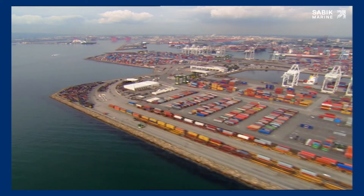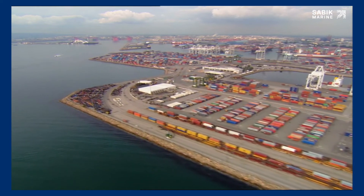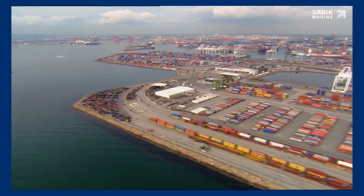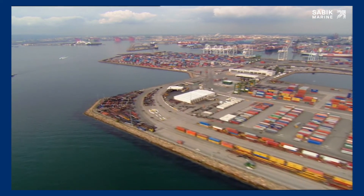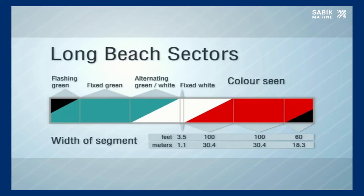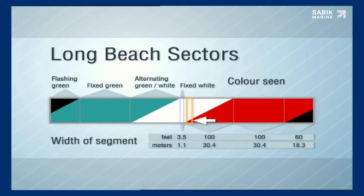Consider how the oscillating boundary is used on the Pell light at Long Beach. The central white sector is very narrow — just over one metre wide at the start of the channel. As soon as the vessel moves half a metre from the centre line, there is a flash of colour every three seconds.